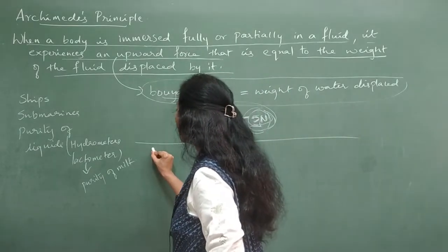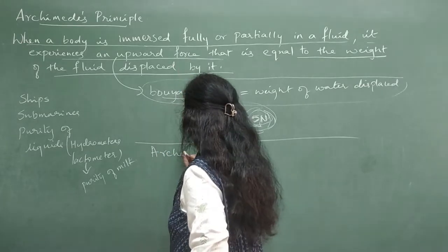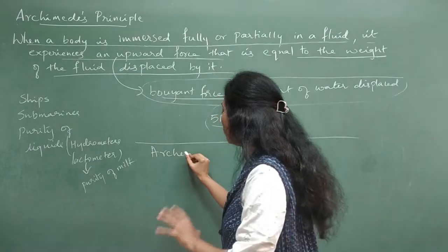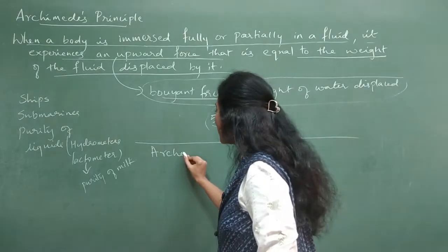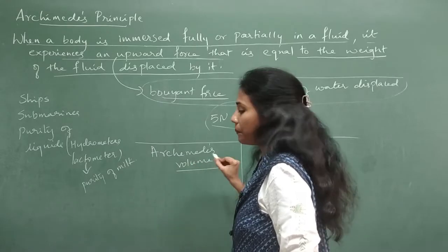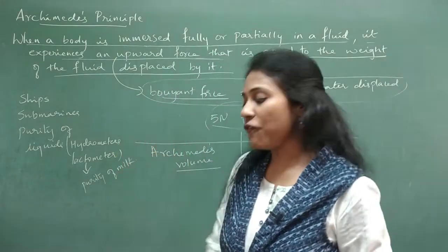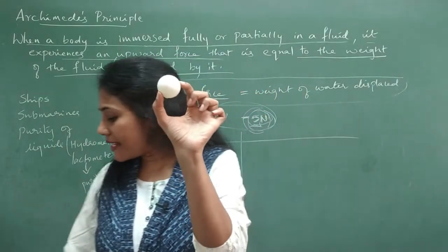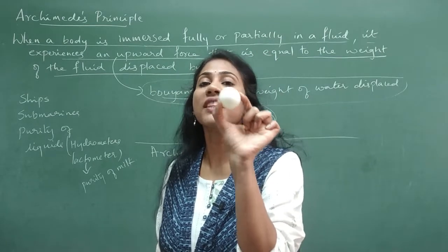There is another form called the Archimedes volume principle. Using Archimedes' principle, you can find out the volume of objects. Say I have this object — a perfect sphere. When you ask what its volume is, you would use the formula for the volume of a sphere.